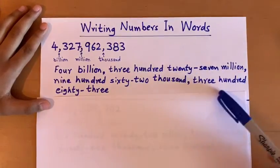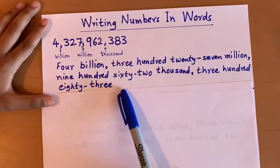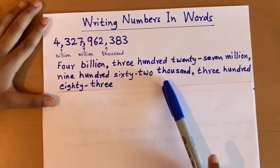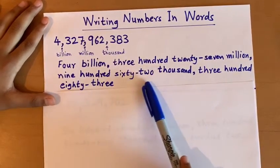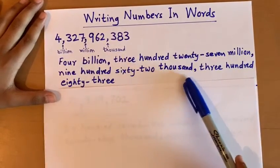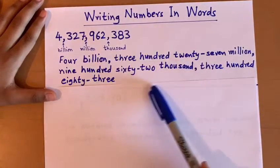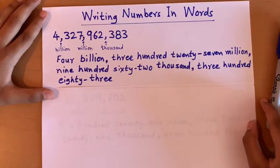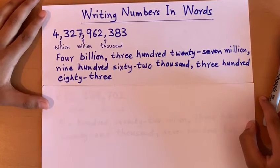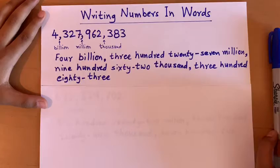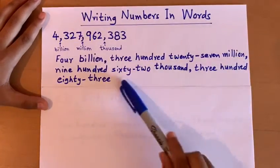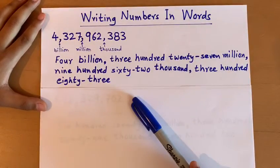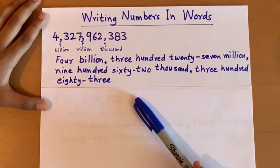we put a comma in our word, nine hundred sixty-two thousand, and since there is a comma in our number, we put a comma in our word, three hundred eighty-three. This is how we write the number in word form for the number 4,327,962,383.